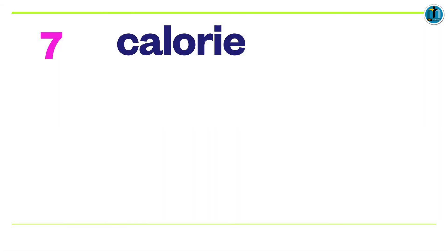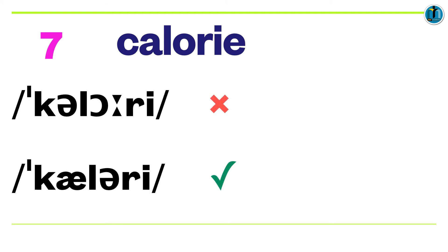Number seven: C-A-L-O-R-I-E. It's not calorie, it's calorie. The initial vowel sound is not schwa, it's æ. And the second vowel sound is not O, it's schwa. Calorie.